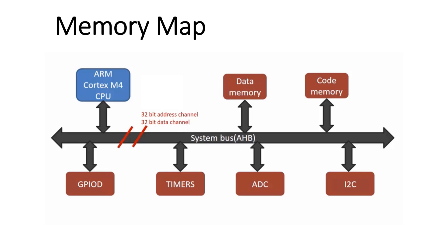Hi all, I am Vinay Kumar. In this series of ARM Cortex-M4, today I will explain to you what is memory map. Memory map is nothing but how the memory is organized and allocated in the Cortex-M4 processor.